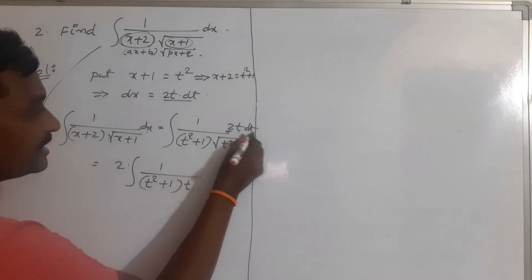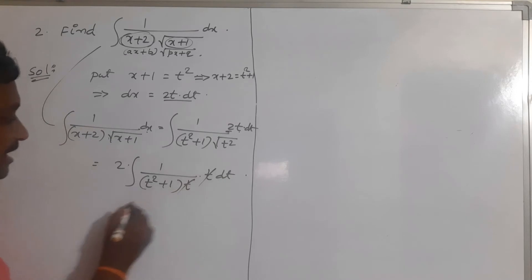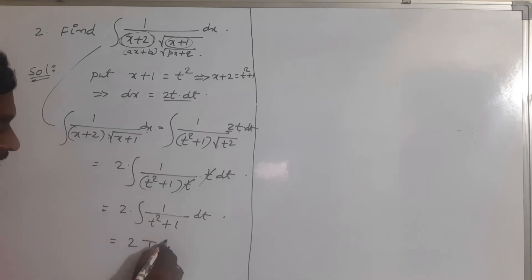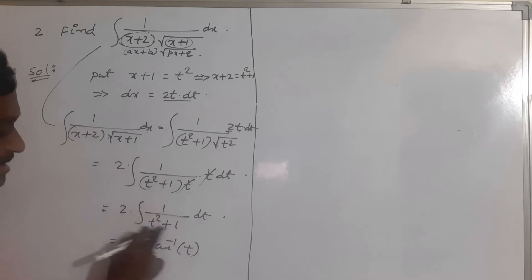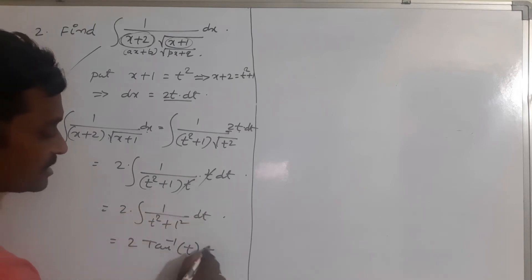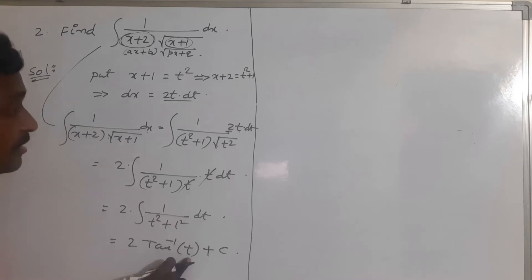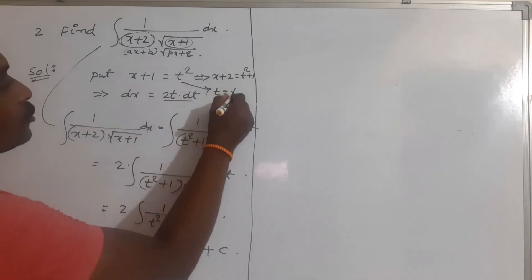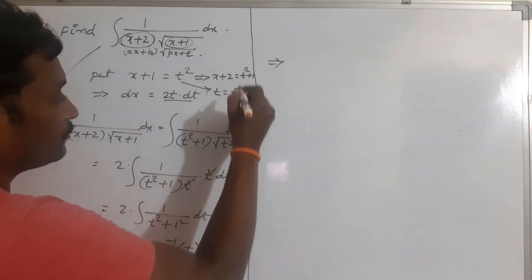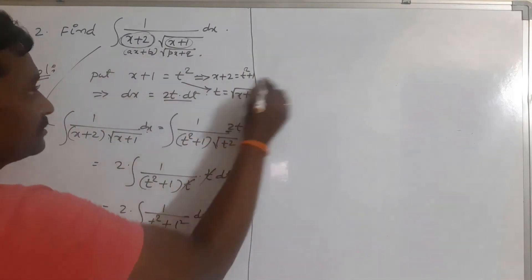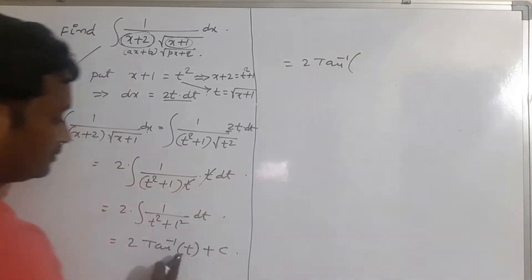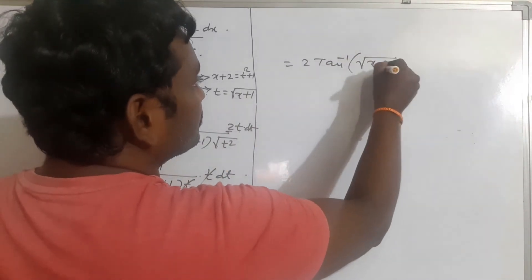So we have t into t dt; t and t cancel. This gives 2 times integration of 1 by (t squared + 1) dt, which equals 2 tan inverse of t plus c, using the standard formula that integration of 1 by (x squared + 1) dx = tan inverse x + c. At the final step, replace t: t = root over (x + 1). So the answer is 2 tan inverse of root over (x + 1) plus c.